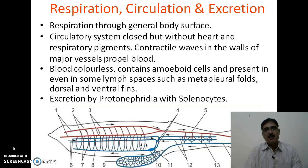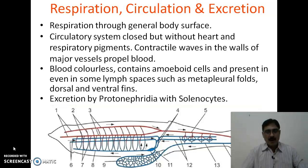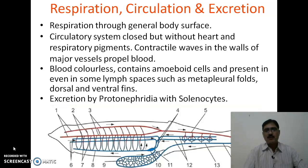The blood is a colorless fluid; there are no WBCs or RBCs, but some amoeboid cells are present. Apart from the blood vessels, blood is also present in lymph spaces like the meta-pleural folds and dorsal and ventral fins. Excretion is carried out by protonephridia, which have a large number of solenocytes also known as flame cells, similar to the flame cells of Platyhelminthes. Additionally, a Hatschek's nephridium is present, along with two sac-like brown funnels and renal papillae, which also act as excretory organs.